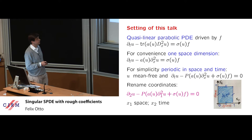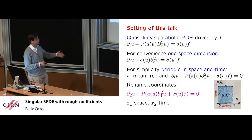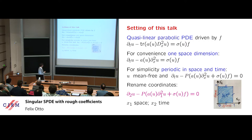In that respect, we're treating this parabolic operator very much like an elliptic operator. This is a convenience, but it also has the advantage that we're not lured into making non-generic assumptions on the initial data which would allow for a short-time existence theory, which perhaps is not the right thing.